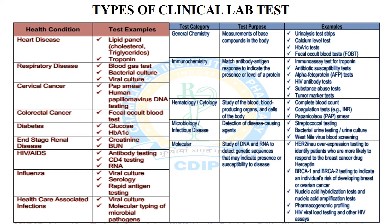The following table shows test categories, their purposes, and examples. The first category is general chemistry. Its purpose is the measurement of body compounds. Examples include urinalysis test strips, calcium level test, HbA1c test, and fecal occult blood test. These are all involved in the general chemistry test category.